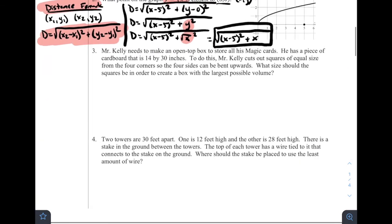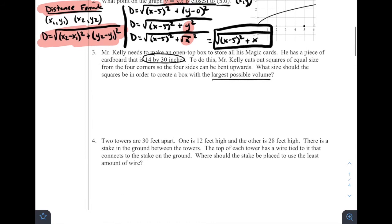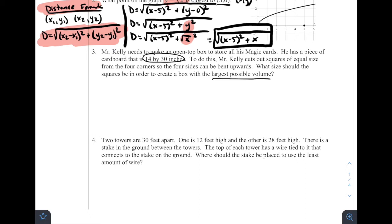Mr. Kelly needs to make an open top box to store all of his magic cards. Yes. Magic cards. He has a piece of cardboard that is 14 by 30 inches to do this. Mr. Kelly cuts out squares of equal size from the four corners so the four sides can be bent upwards. What size should the squares be in order to create a box with the largest possible volume? So this is a classic style problem, right? You have a limited sized piece of cardboard and you want to make the largest possible volume, right? So we have a certain size piece of cardboard. How do you make the biggest box that has the largest volume? This is an activity that lots of students do either in grade school or maybe in geometry class.